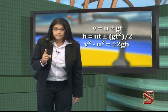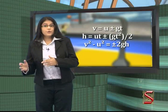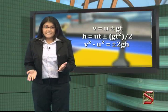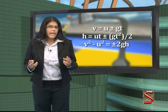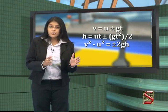Number one: v is equal to u plus or minus gt. Number two: h is equal to ut plus or minus gt squared divided by two.